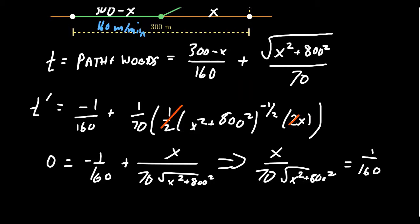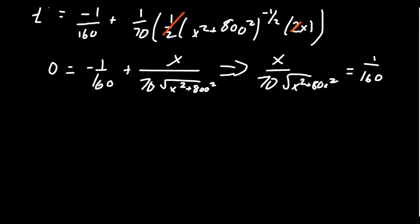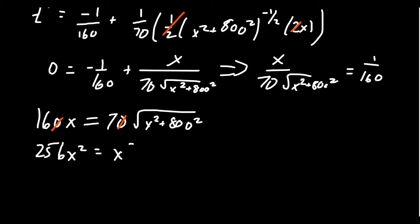So x over 70 times the square root equals 1/160. Again, we will cross multiply. We get that we have 160x = 70 times the square root. Here there is a common factor of 10 between 70 and 160. Let's cancel that out. And so then square both sides. We're going to get 16² which is 256—46 times x². This equals—I'm sorry, 49.